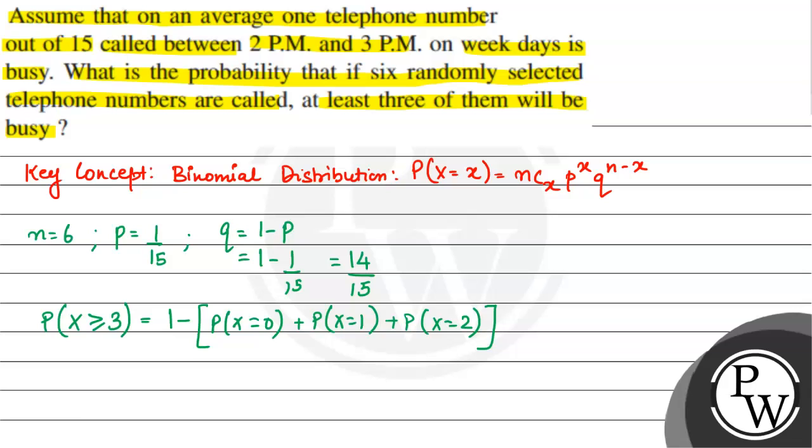First let's put it in standard form and then we will solve this. So probability of x equals 0, that will be nCx, n is 6, C x is 0.